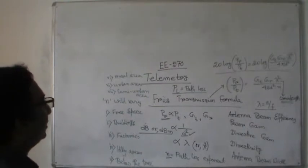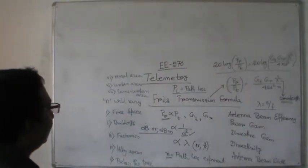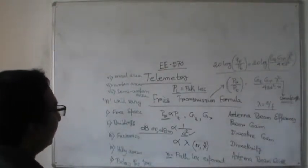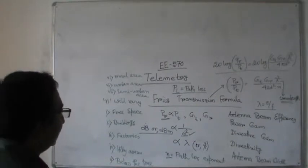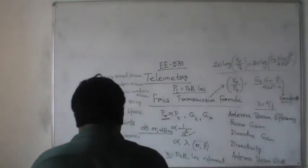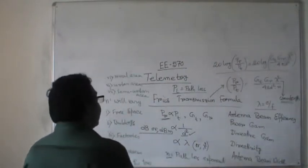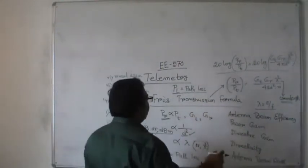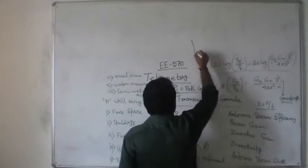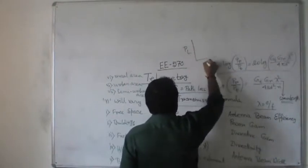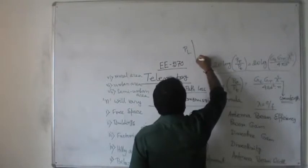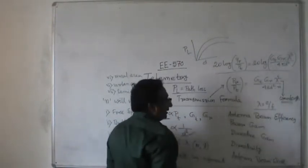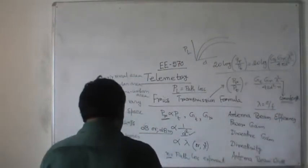In short, we can say that the path loss exponent is a very important factor in terms of path loss. We can represent path loss with respect to path loss exponent and with respect to distance. If we plot path loss versus distance, we can see various types of waveforms — that means an exponential type of relationship.